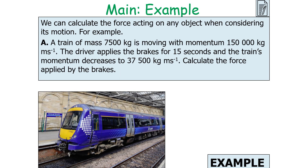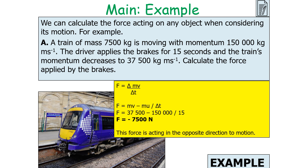We can also use this to calculate the force acting on an object. A train of mass 7,500 kilograms has a momentum of 150,000 kg·m/s. The driver applies the brakes for 15 seconds and the train's momentum decreases to 37,500 kg·m/s. Calculate the force applied by the brakes. Force = change in momentum / time = (37,500 − 150,000) / 15 = −7,500 newtons. The negative sign indicates the force acts in the opposite direction to the motion.